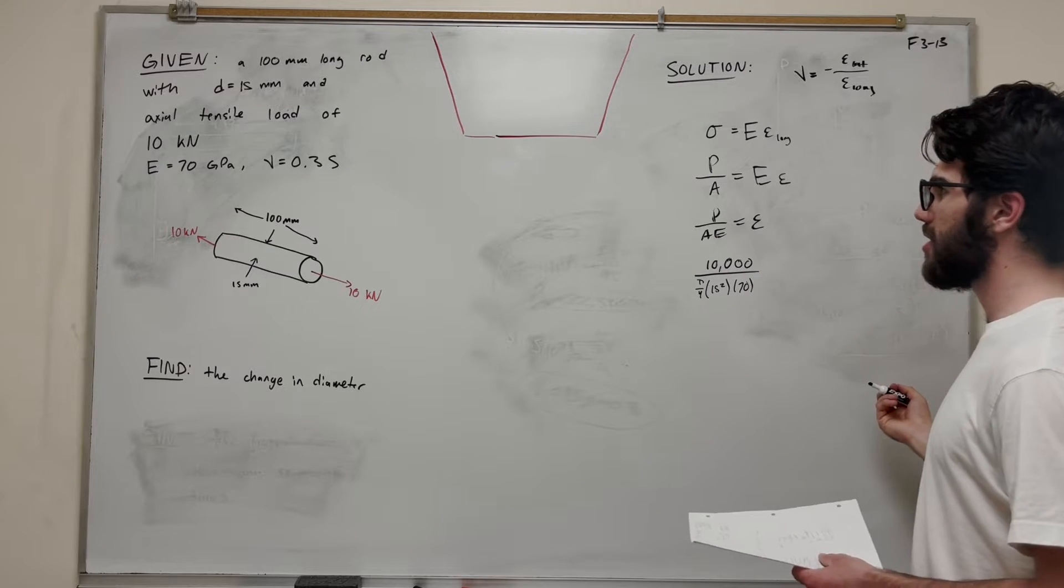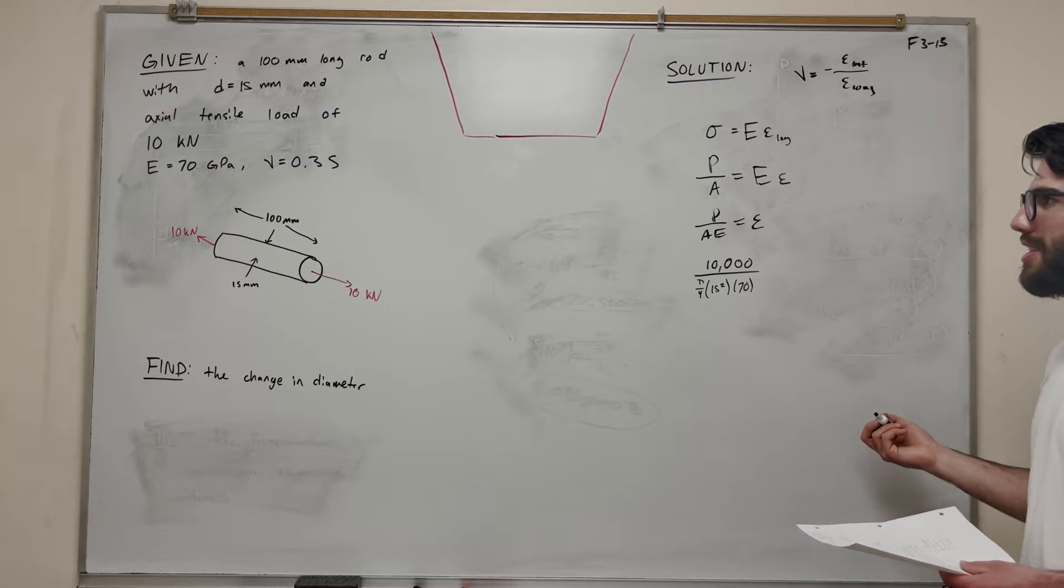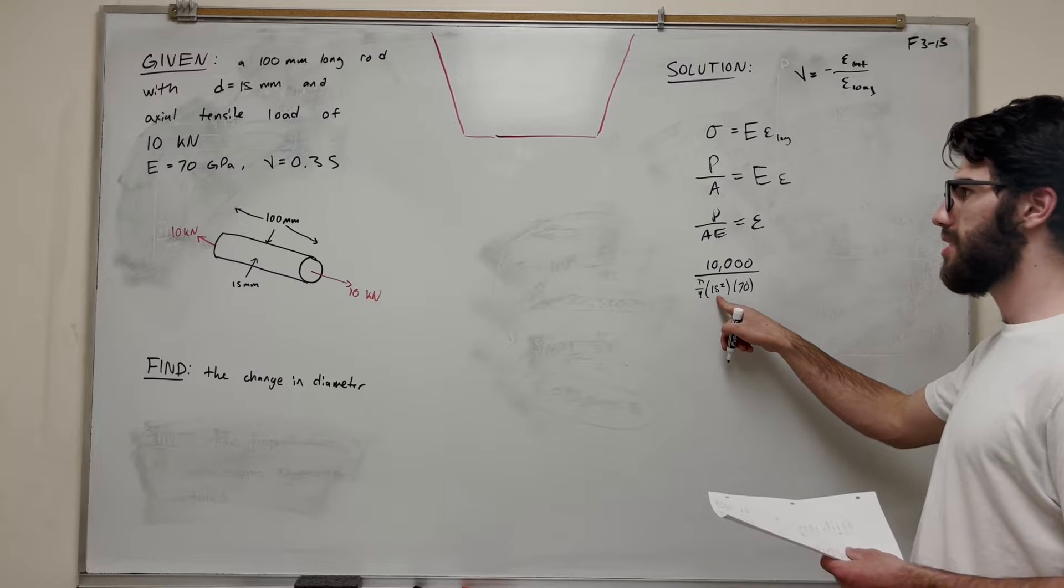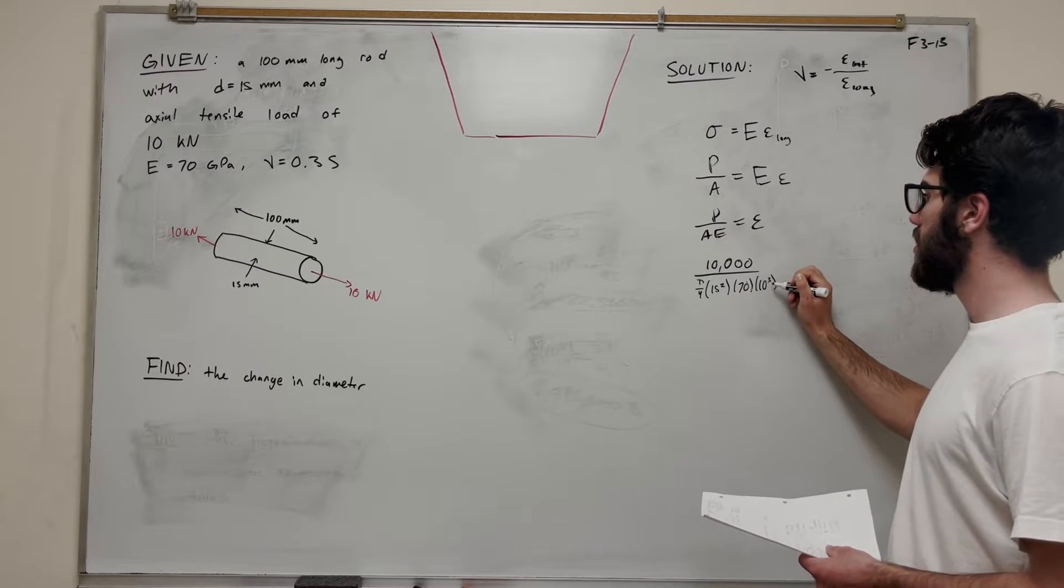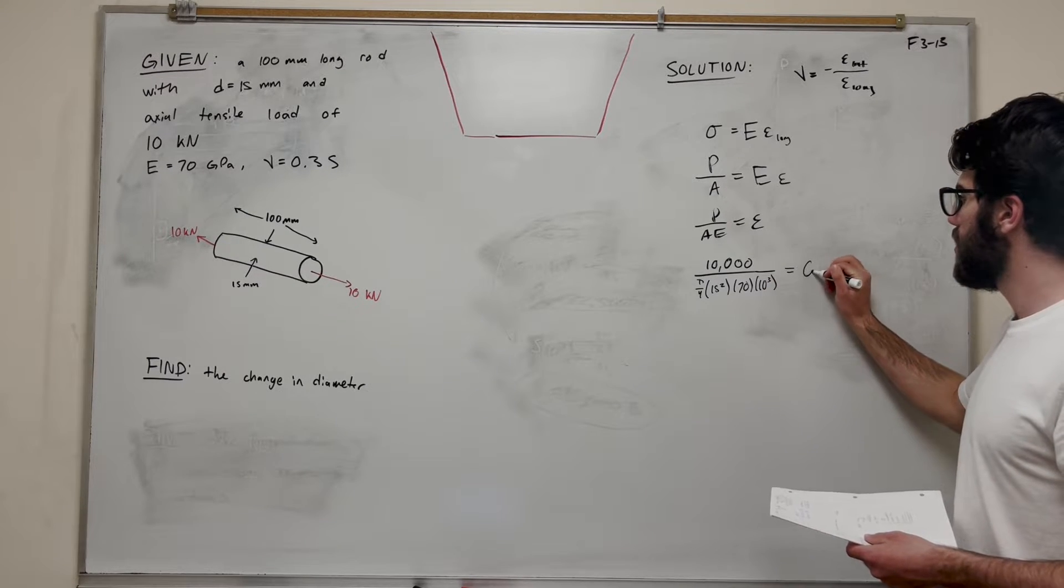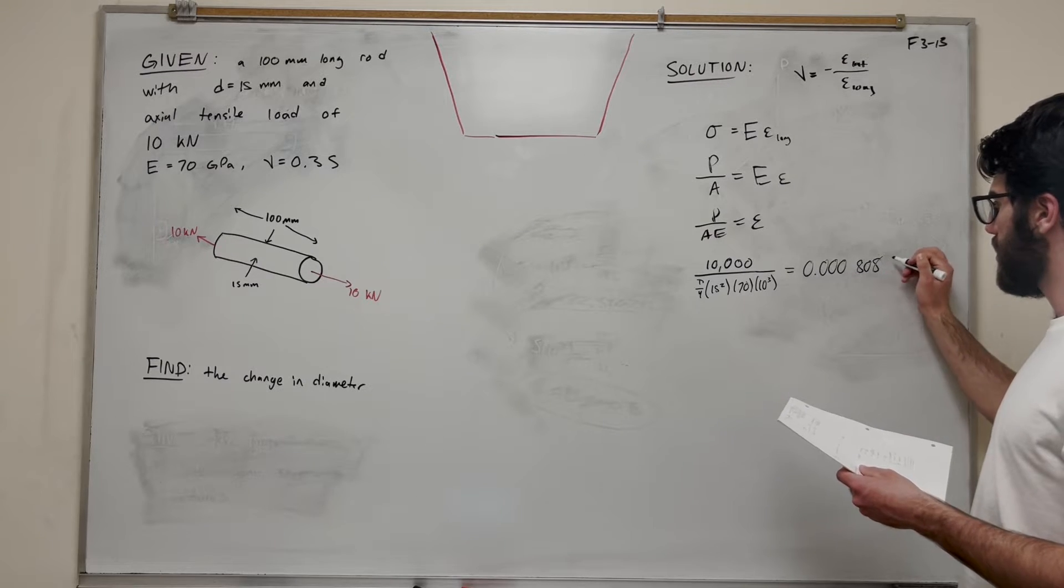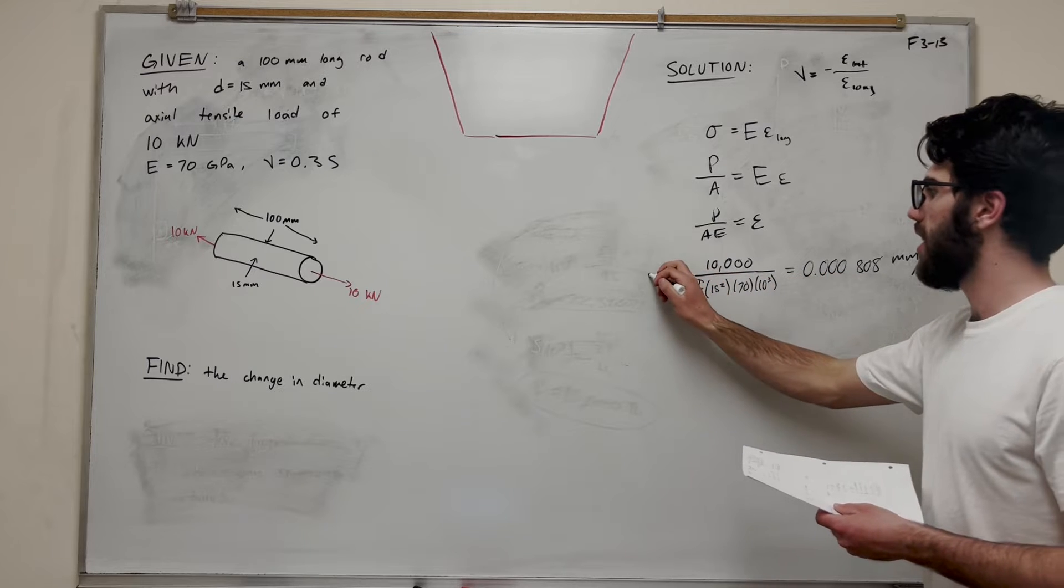It's in gigapascals, so we need to convert that to normal pascals. This is in millimeters squared, so this is 10 to the negative 6. GPa is 10 to the 9th, so we need to put a 10 to the 3rd here. This gives you 0.0000808 millimeters per millimeter, and that's epsilon long.